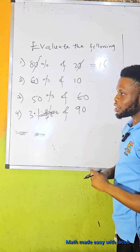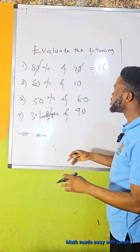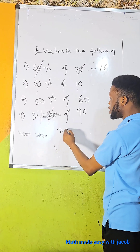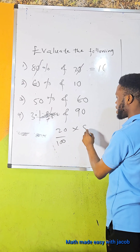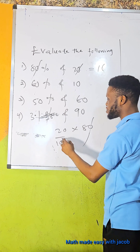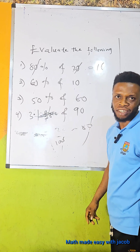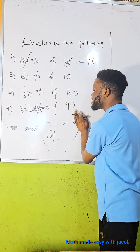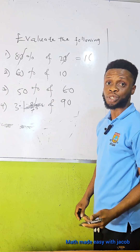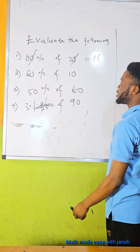Let's look at the longer method. Instead of using the longer method where you say 20 over 100 times 80, when you start canceling out the zeros — please stop it. Stop using that approach. It is time-wasting and it is stressful. So let's go to the next question.